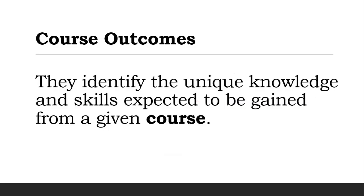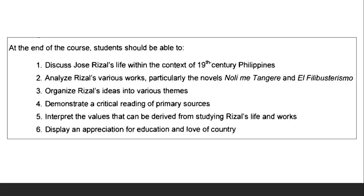Next is the course outcomes. Course outcomes are more detailed and specific compared to program outcomes because they identify the unique knowledge and skills expected to be gained from the given course. For this example of Jose Rizal, we have six course outcomes. Remember, if you have six course outcomes, at the end of the program all six course outcomes should be assessed.